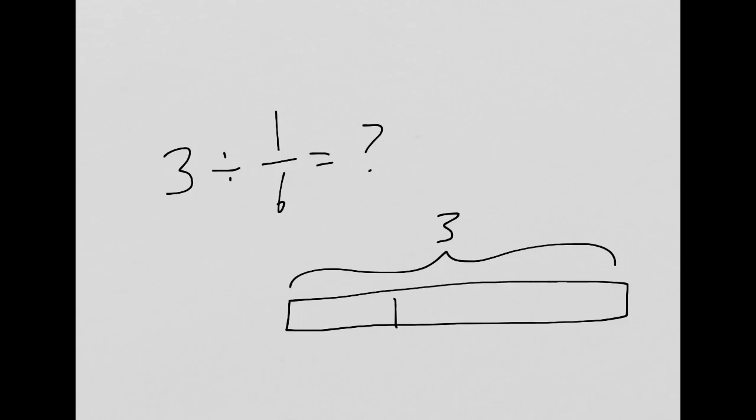If I divide this first into ones, that's one, two, three, and then each one, one, two, three, four, five, one, two, three, four, five, one, two, three, four, five, those are, each one is now divided into six pieces. How many can I make? Well, if you count them up, you'll see that there are 18.